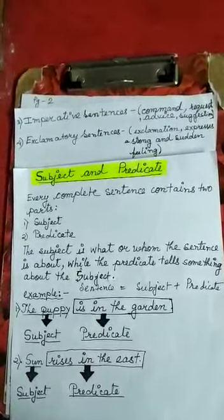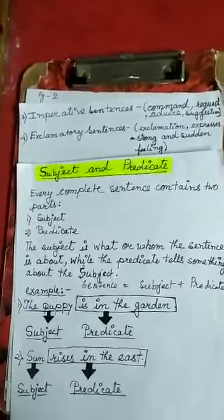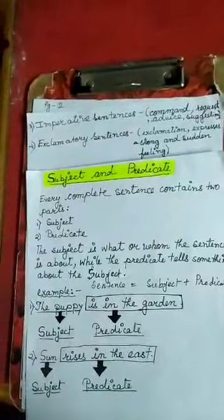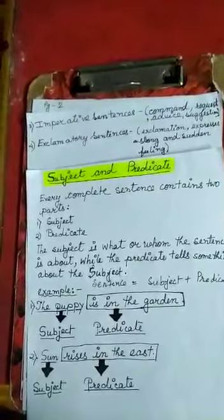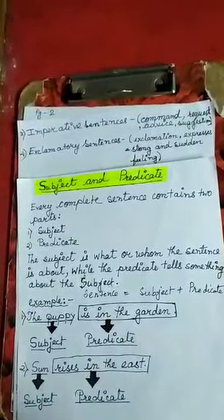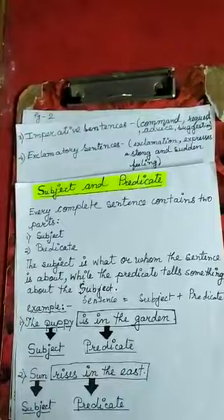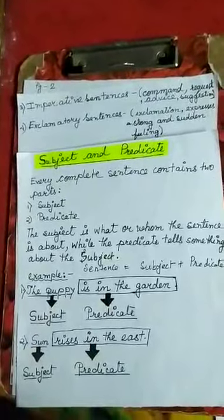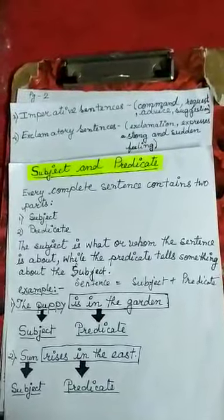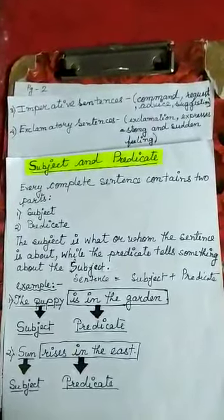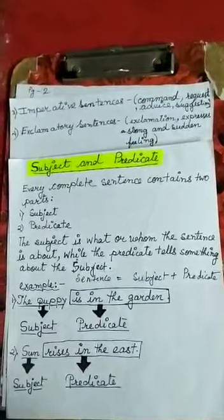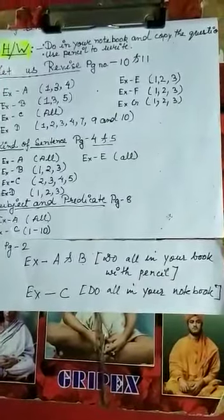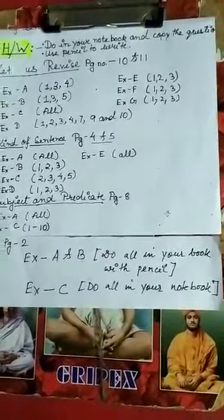So, sentence equals subject plus predicate. Example: 'The puppy is in the garden.' Here, 'the puppy' is the subject, and 'is in the garden' is the predicate. Another example: 'The sun rises in the east.' So 'the sun' is the subject, and 'rises in the east' is the predicate.